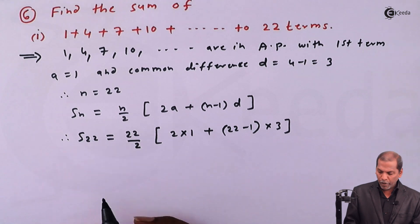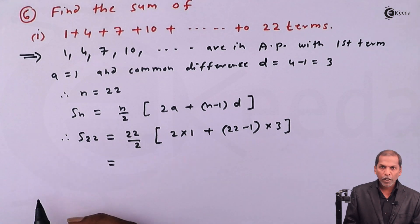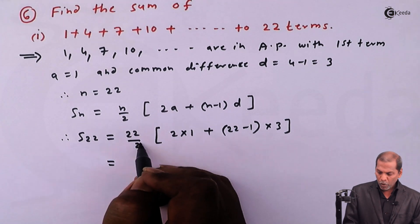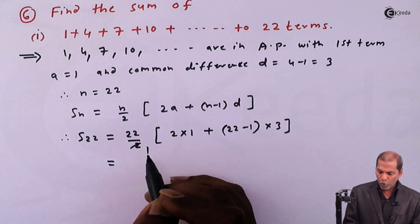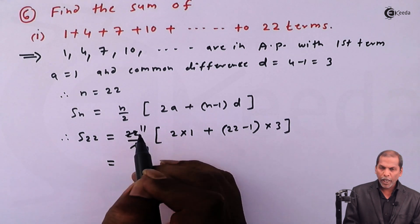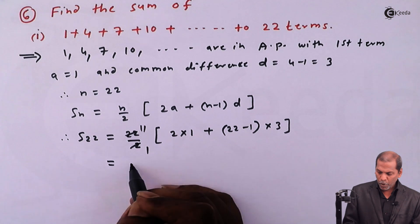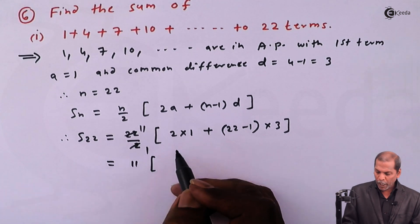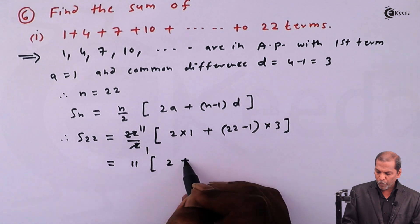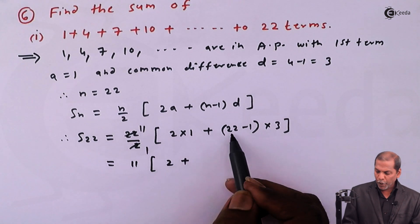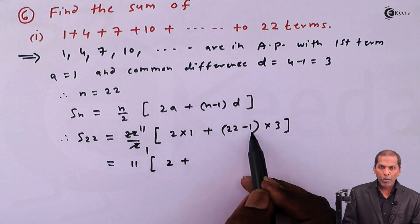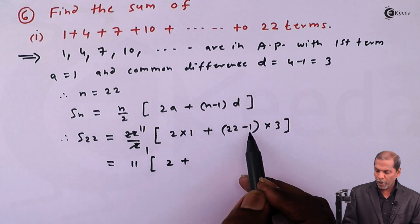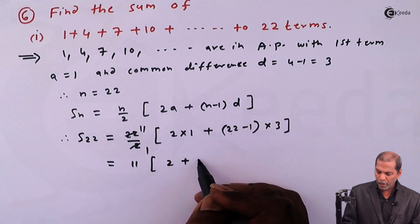The next step: if we cancel here, 2 into 1 is 2, 22 upon 2 is 11. So 11 in bracket, 2 multiply by 1 we get 2, plus 22 minus 1 gives 21, 21 into 3 we get 63.